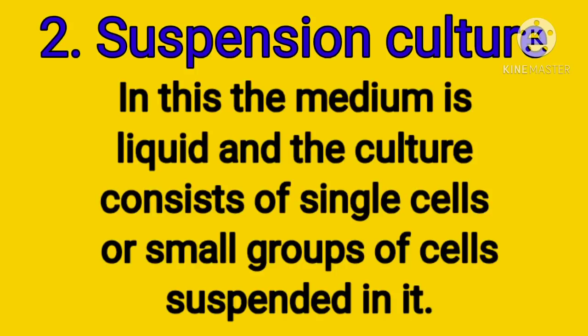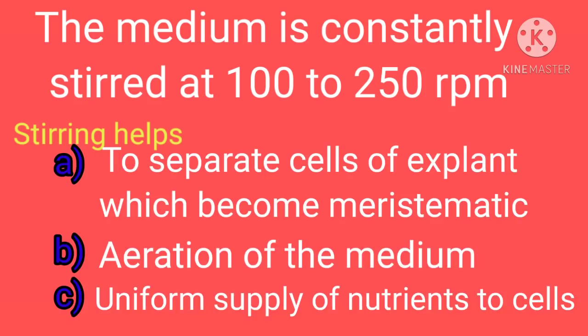The next type of tissue culture method is suspension culture. In this, the medium is liquid and the culture consists of single cells or small groups of cells suspended in it. The medium is constantly stirred at 100 to 250 rotations per minute.